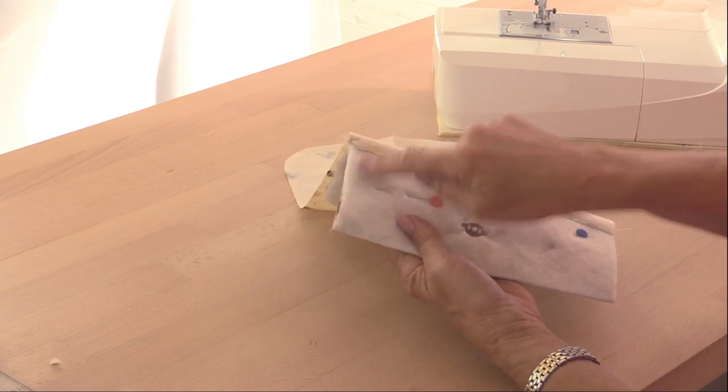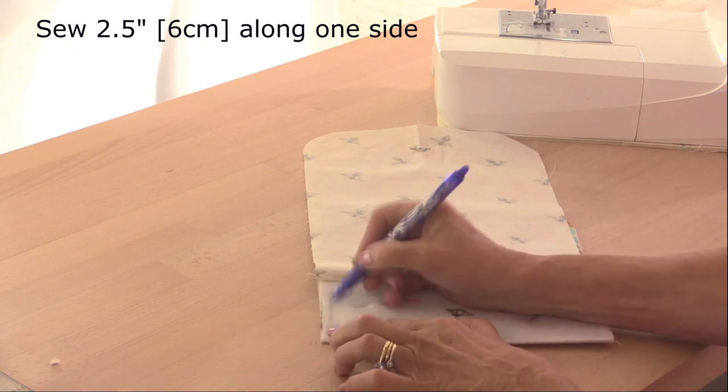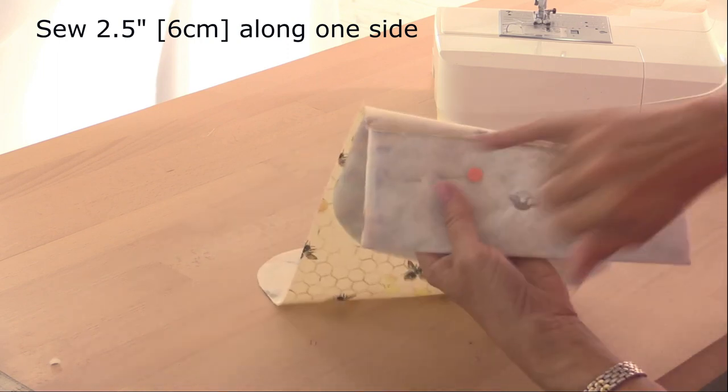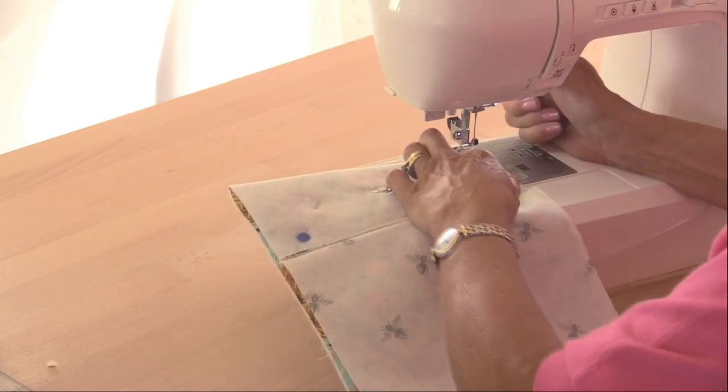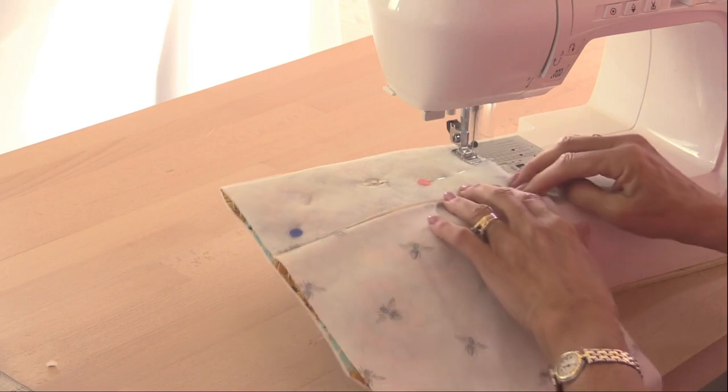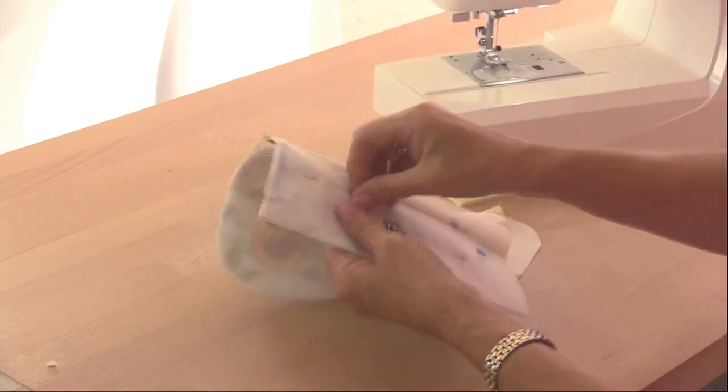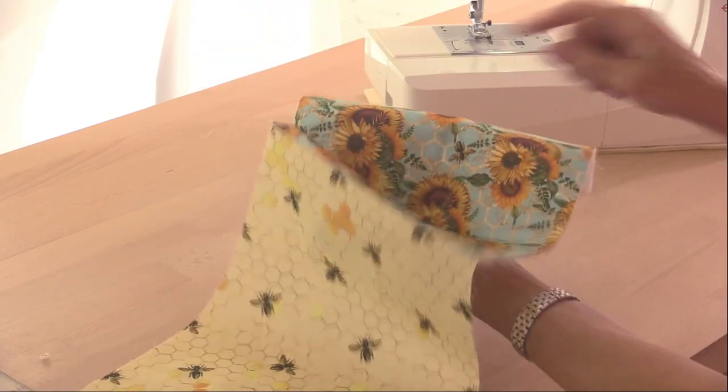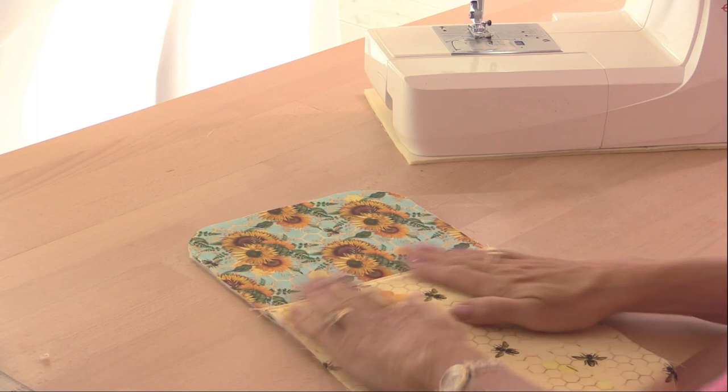And I'm just going to sew along the side here by about two and a half inches. Say from there, doesn't have to be exactly two and a half inches, but this is going to be your turning gap. So I'm just going to sew from here to here. So I now have this with just the side sewn, partly at the side.